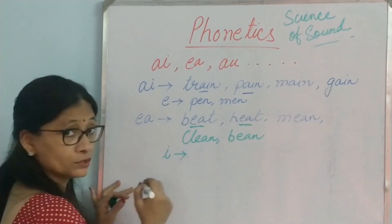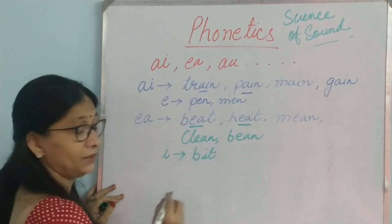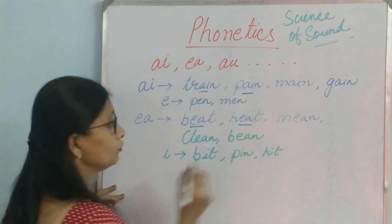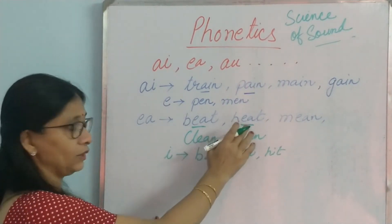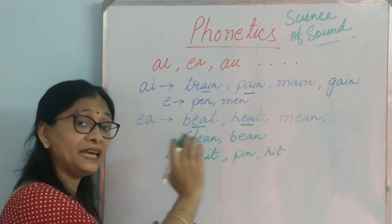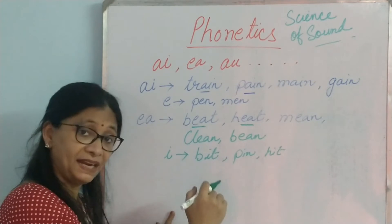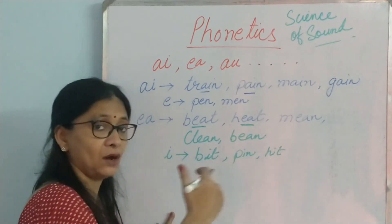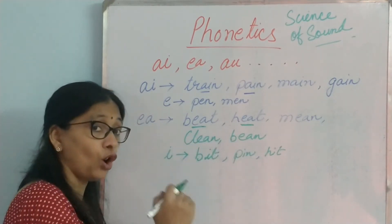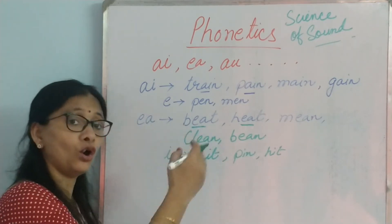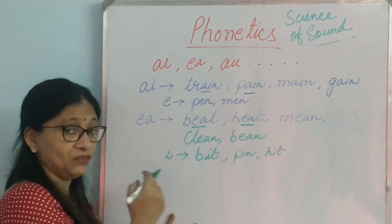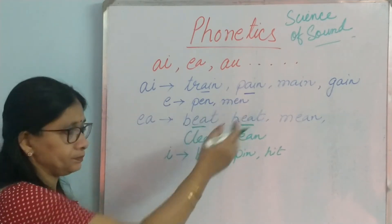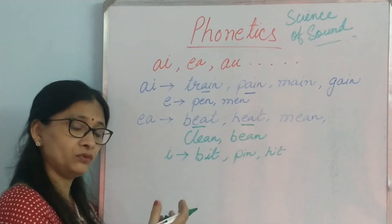But the EE sound we got from I also, like bit, pin, hit. So what is the difference? Look at heat — H-E-A-T — heat. But H-I-T is hit. Here we are getting a long EE sound, and here we are getting a short EE sound. So with EA we get a long EE sound, and with I we get a short EE sound. With regular practice you will be able to see the difference even more clearly.